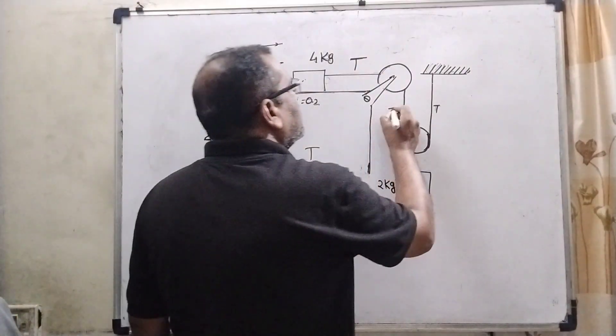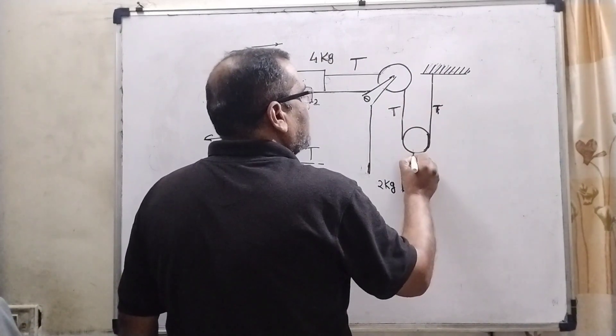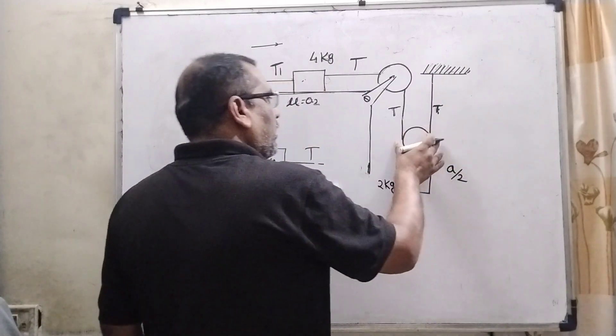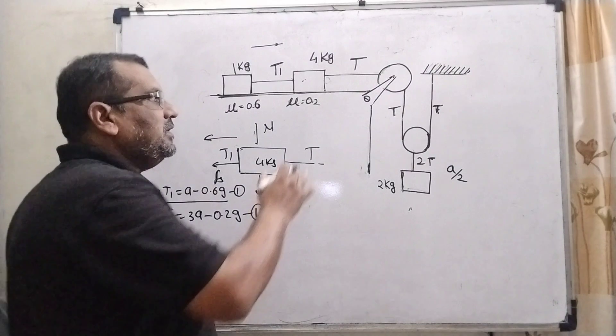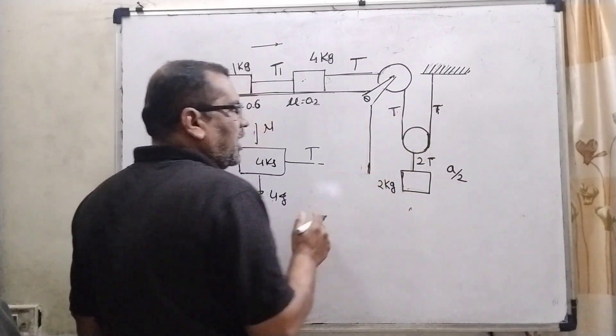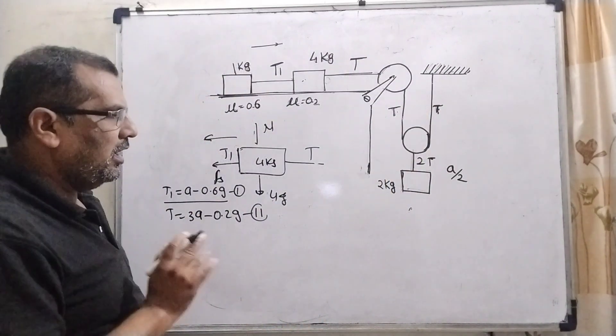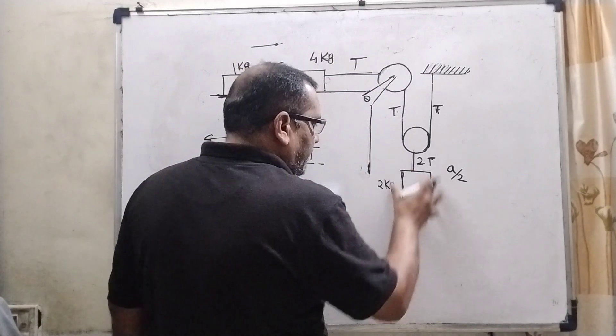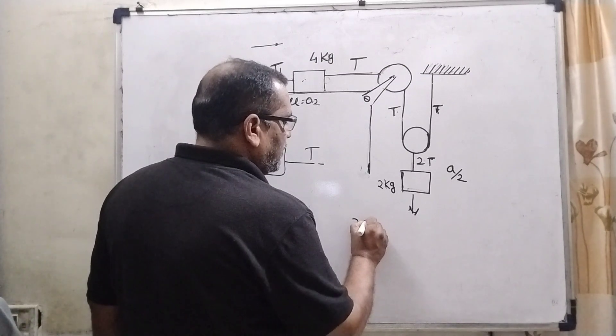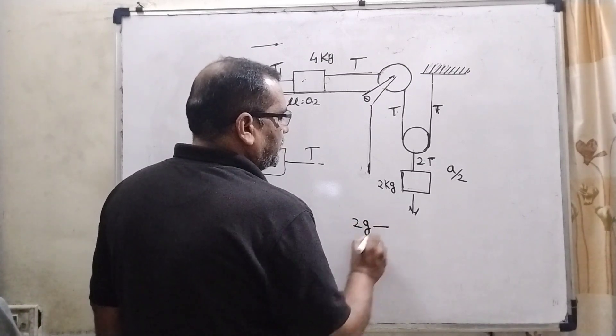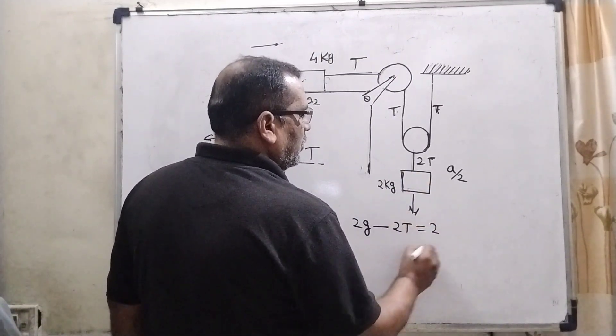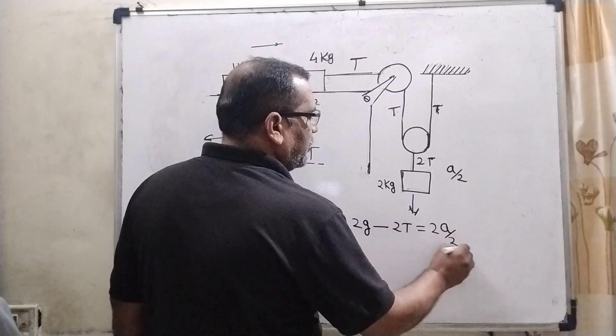Now here we can see that here the tension applied here the tension applied. So here 2t and now acceleration become half. When tension become double then acceleration become half because here displacement is directly proportional to the x. So therefore x is divided in two parts. So therefore acceleration become half. So in this case mg acting downward direction 2t, 2t is acting upper direction. So 2g minus 2t equal to here the mass is 2kg and acceleration a by 2. Is that clear?